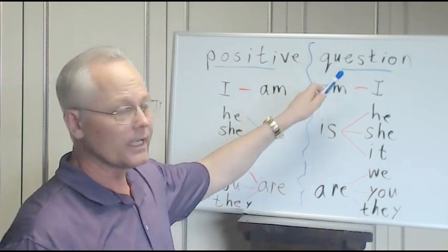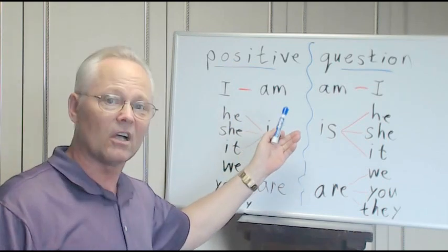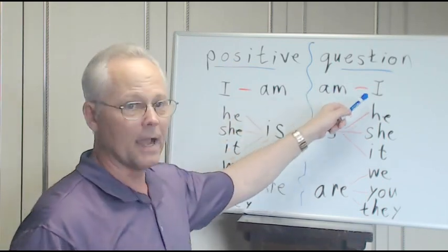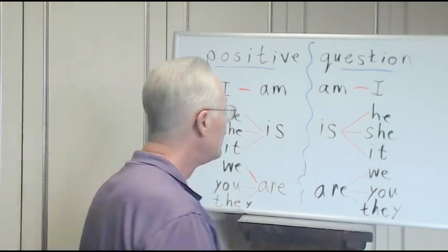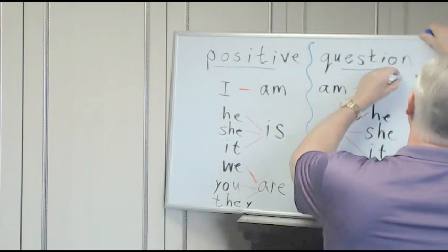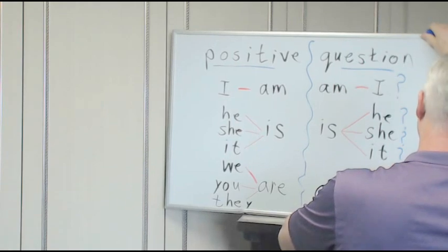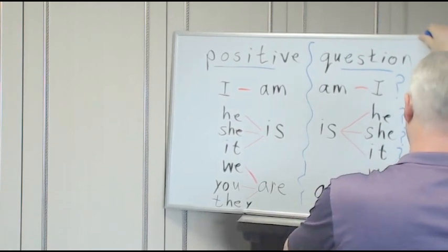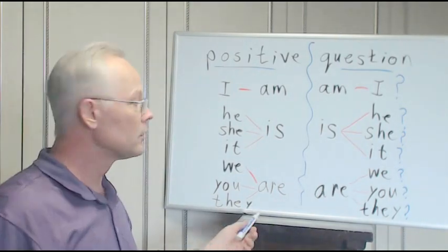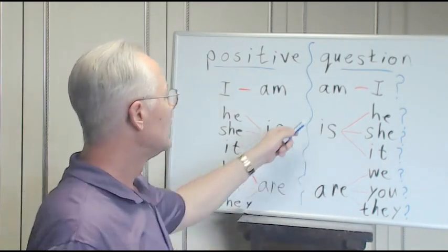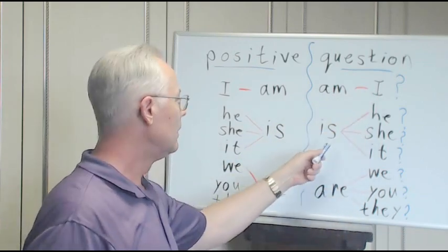Now let's go over here to the question. We simply reverse everything, that's all we do. Am I? Maybe we should put up a question mark here. It's all reversed from positive to question. Am I? Is he? Is she? Is it?